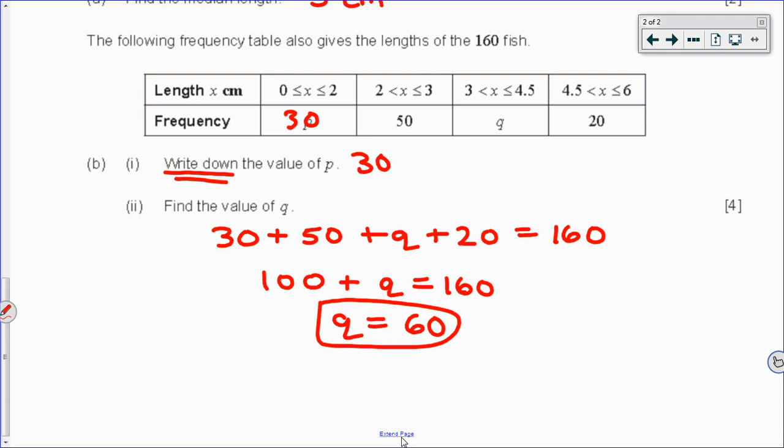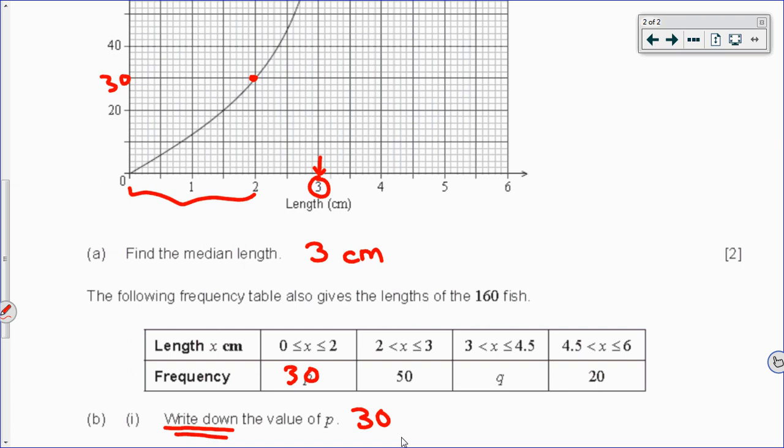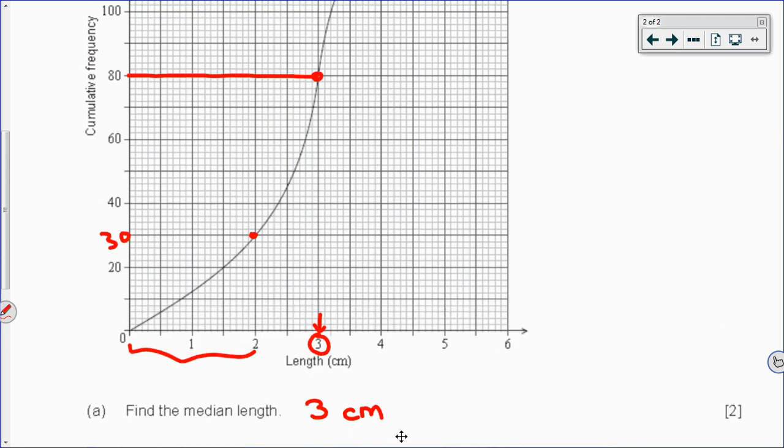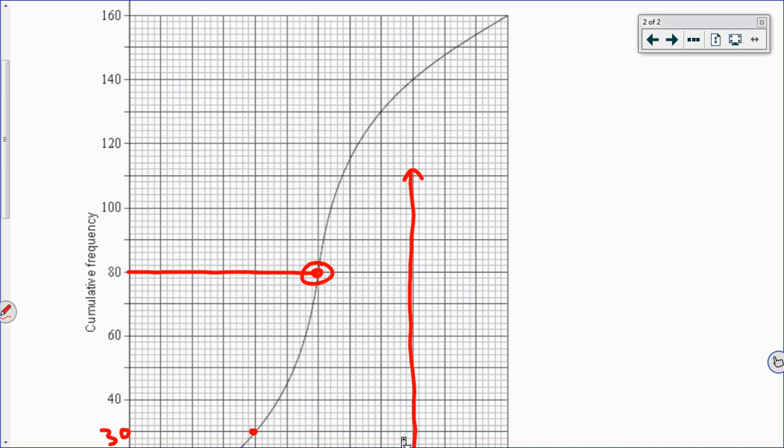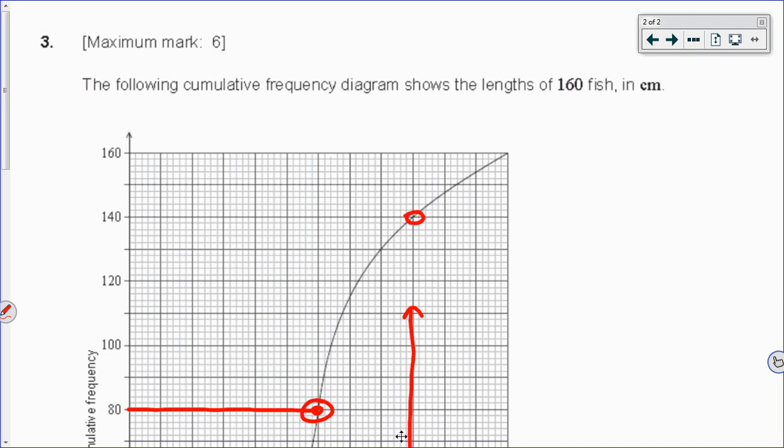And the other way to do it would be to look on the graph the same way we found the 30. So Q is between 3 and 4.5 centimeters. So between 3 and 4.5 centimeters on this graph, I'm going to have to scroll up a little higher to see it, 3 lines up here with the 80. But 4.5, which is here, a little bit off the page, I'm going to have to scroll up even further, lines up with a frequency of 140. And you can see the distance between 80 and 140, and this is another way to show work for Q, would be 140 minus 80, which is 60, or show it on the graph.